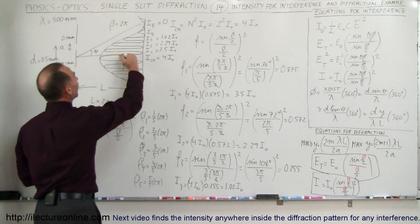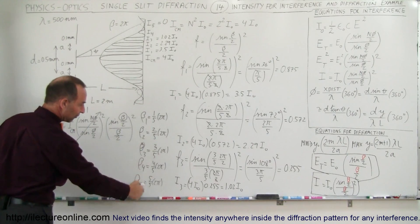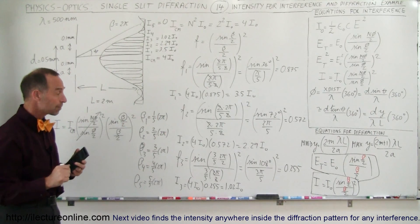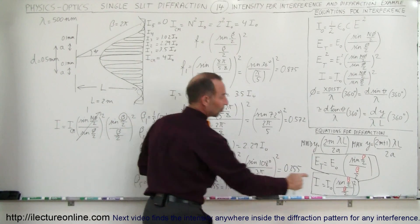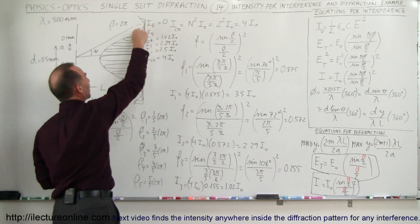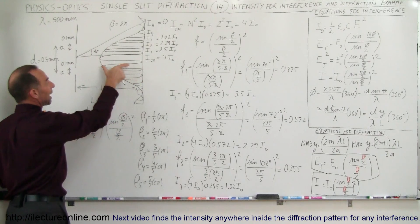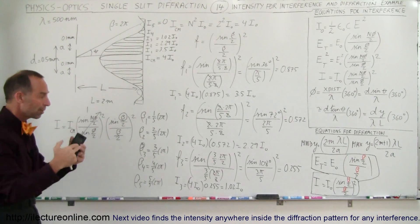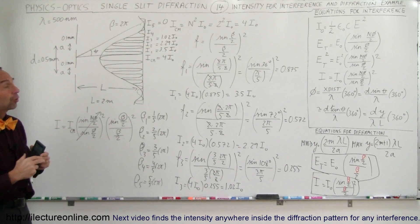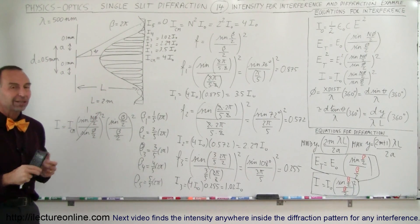So that's how you find the intensity of every one of the fringes. What you need to do is find the phase difference — the five fringes have phase differences of one-fifth, two-fifths, three-fifths, and so on of a full phase difference of two pi. Then you find the diffraction factor, multiply it by the interference pattern intensity, which is one at each maximum, and that gives you the intensity of each fringe. On the next video we're going to show you how to find the intensity of any location inside this diffraction pattern, so take a look at our next video as well.